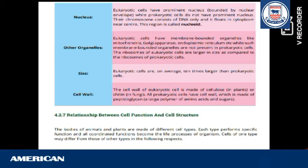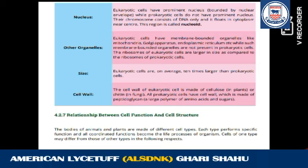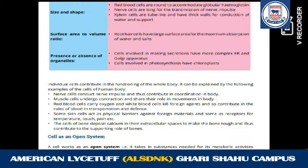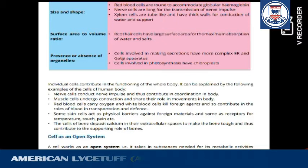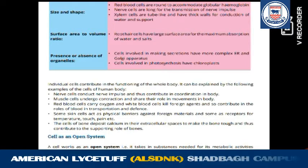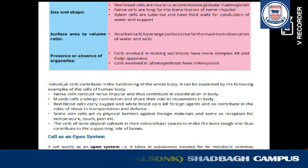The human body is made of about two hundred types of cells — mark this for objective. Size and shape: red blood cells are round because they contain hemoglobin. Blood cells basically contain hemoglobin and transport oxygen across the body, all over the body.